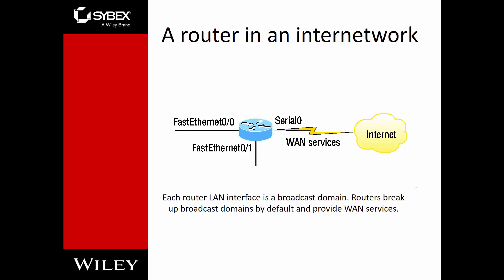A router in an internetwork acts as a default gateway. If our LAN is on this side, this interface is part of our LAN and will be our default gateway. If we don't know where to send a packet, we send it to our default gateway, and it makes the routing decision based on the packet. This also prevents broadcasts from going out, since no broadcasts will be forwarded because it's a layer 3 device.